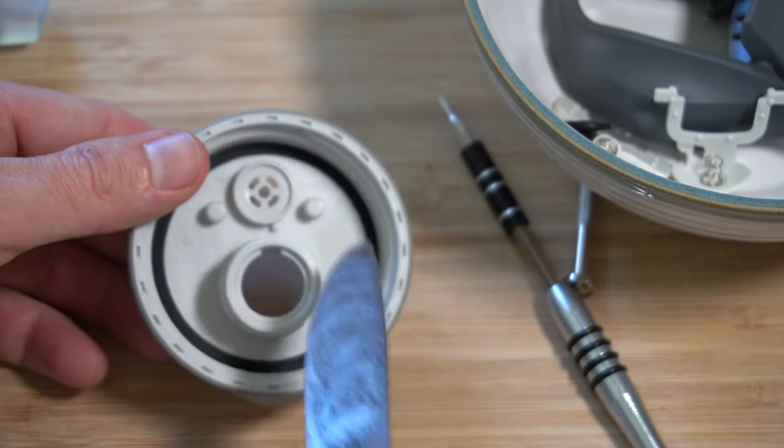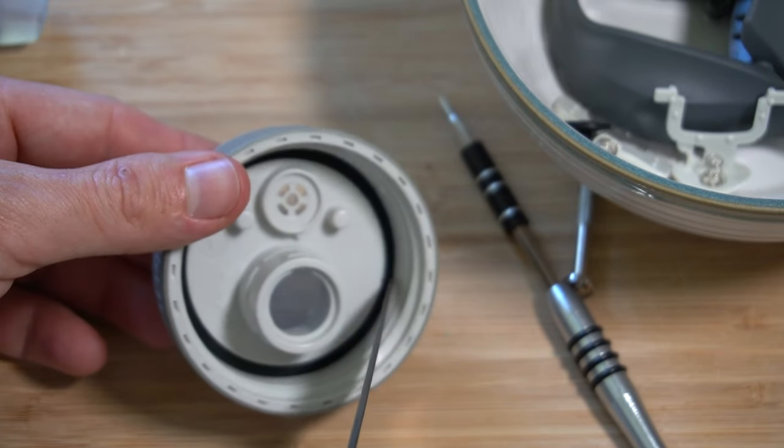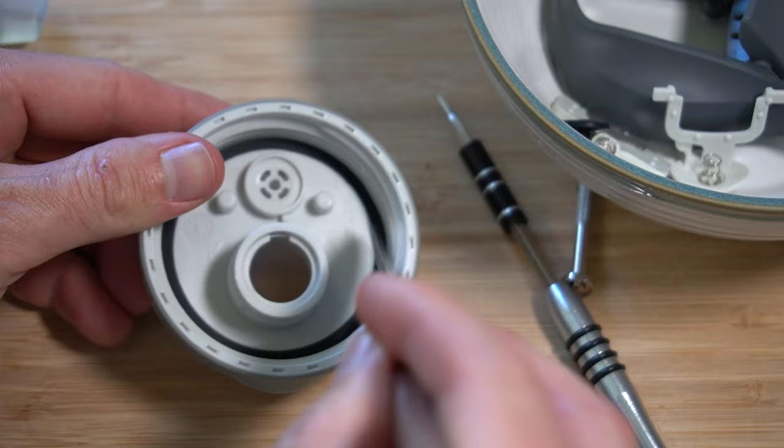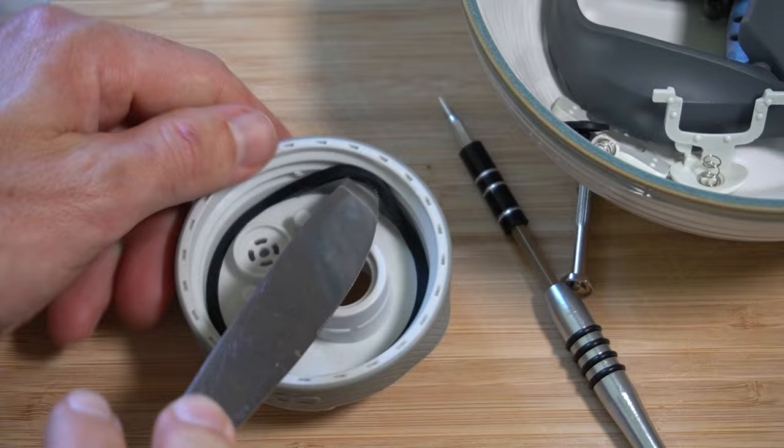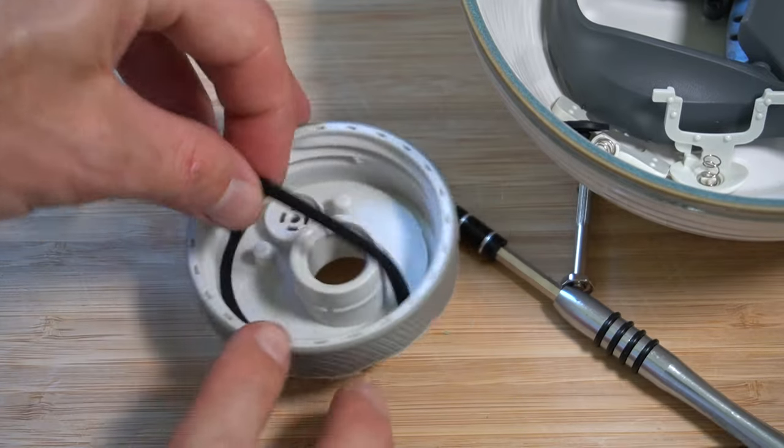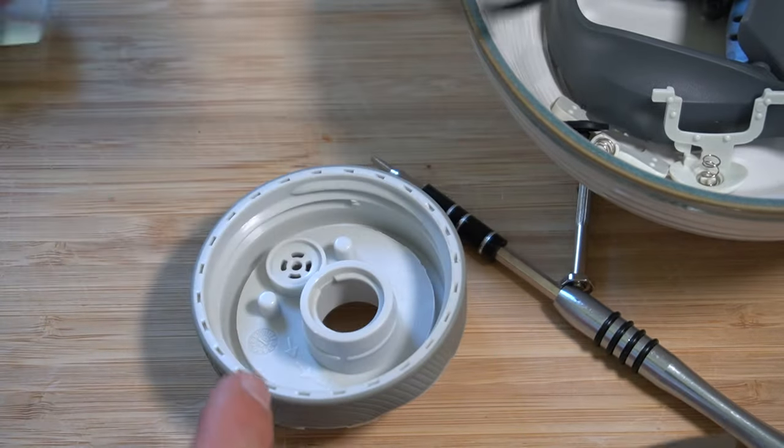Here, we also want to remove the rubber gasket as a lot of mold can grow in there. So with our butter knife, you just want to kind of pop it out. Be careful not to break it, but it should come out and then you can grab it and pull it out all the way to wash it.